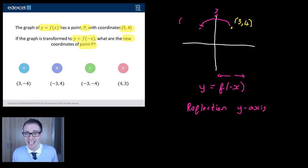Well, what stayed the same? Well, the height has stayed the same. So, the y value stayed the same, so that must be 4. What's happened to the x value? Well, that's become negative. So, it's (-3, 4).